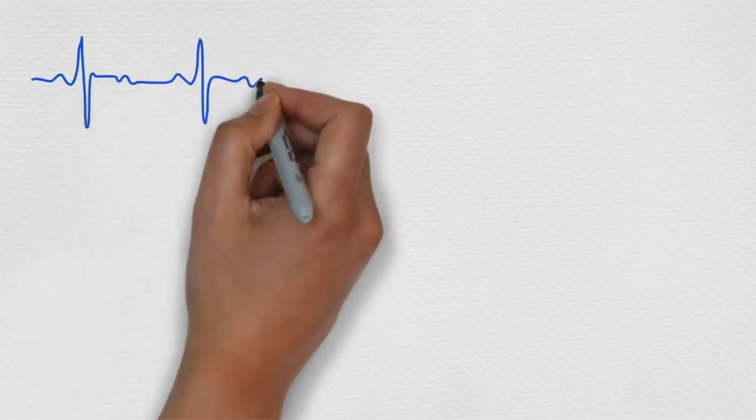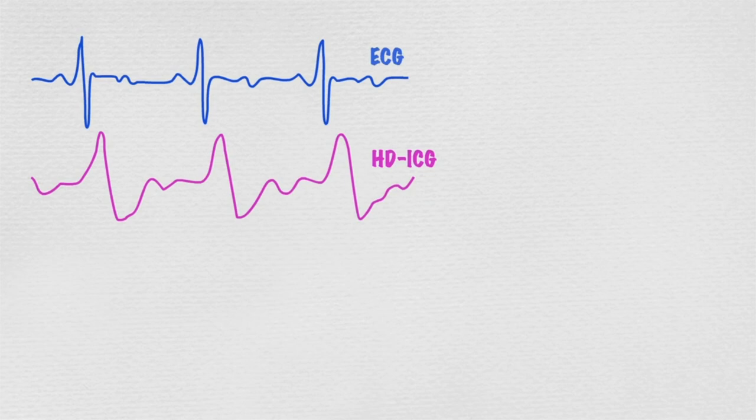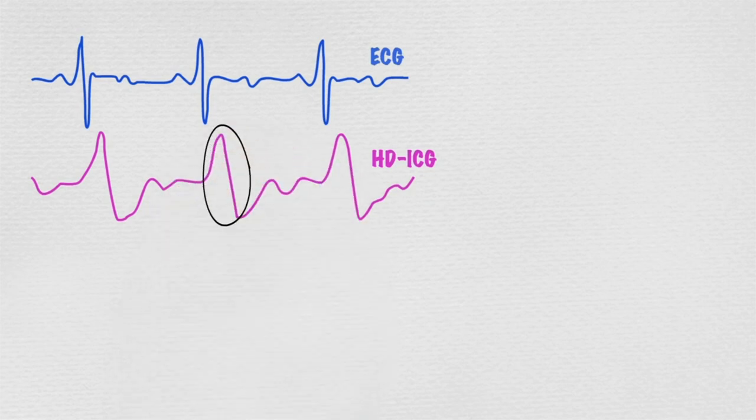This is an example of the HD-ICG signal and its relation to ECG. The major feature is the S-wave, which corresponds with systole.